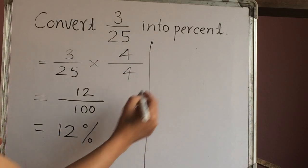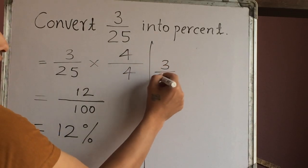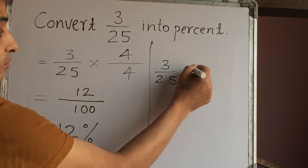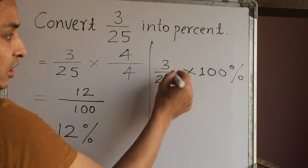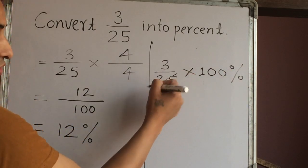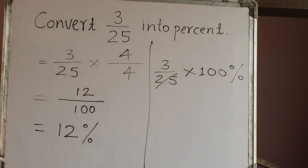The same one we can do here. Write the fraction here, 3 over 25. Let's multiply with 100 percent. Now reduce this fraction, 25 times 4 is 100.